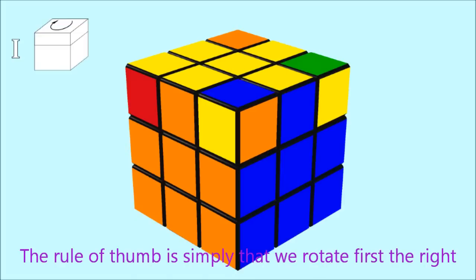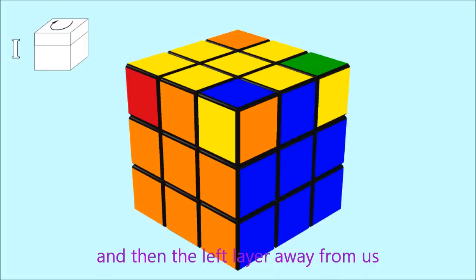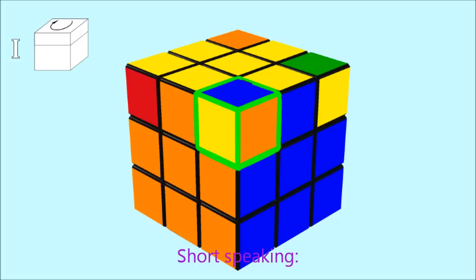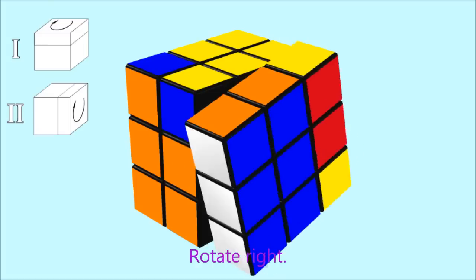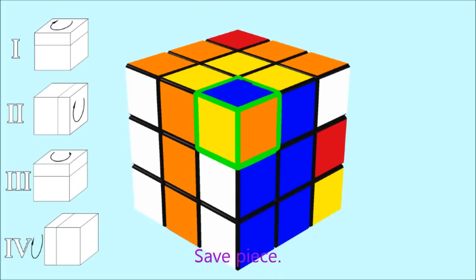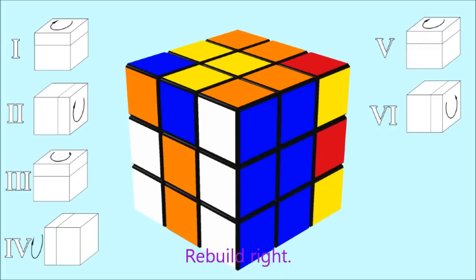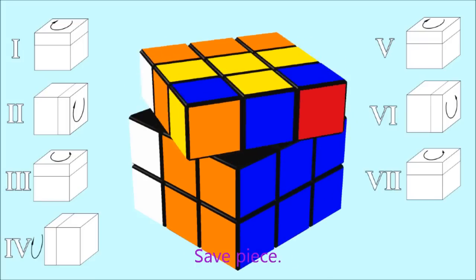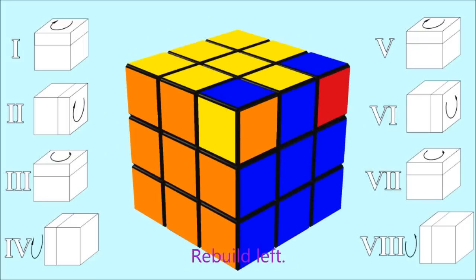The rule of thumb is simply that we rotate first the right and then left layer away from us and rebuild it afterwards. Short speaking: save piece rotate right, save piece rotate left, save piece rebuild right, save piece rebuild left.